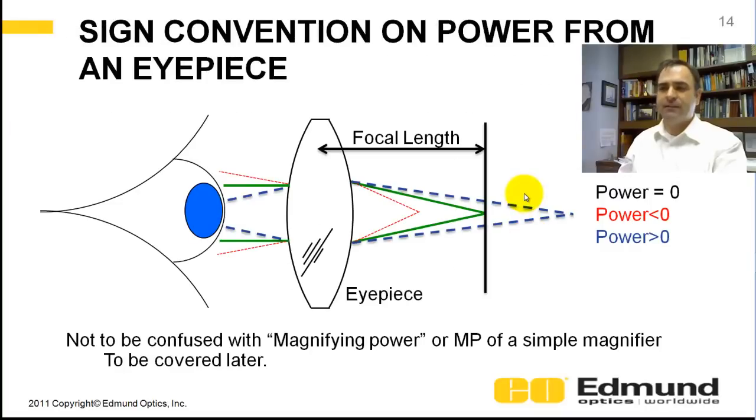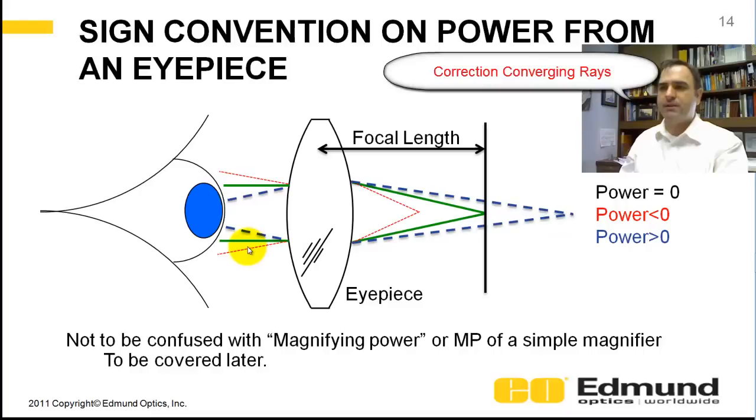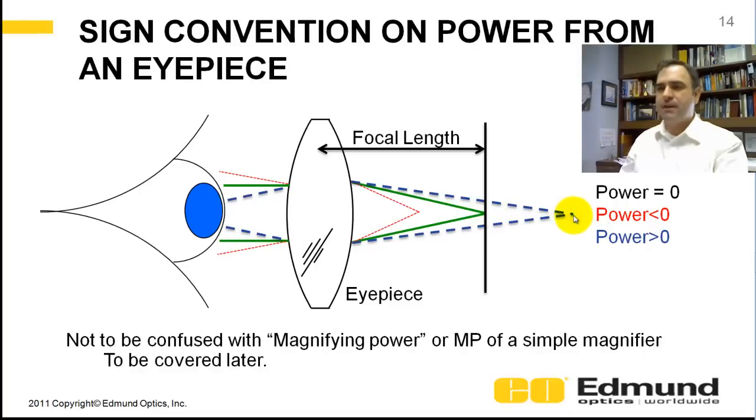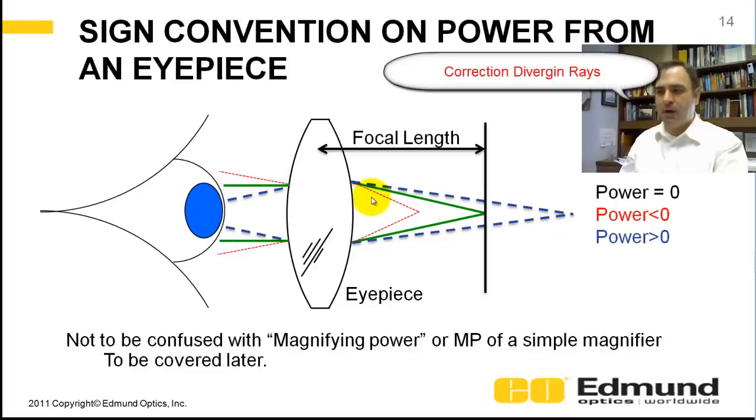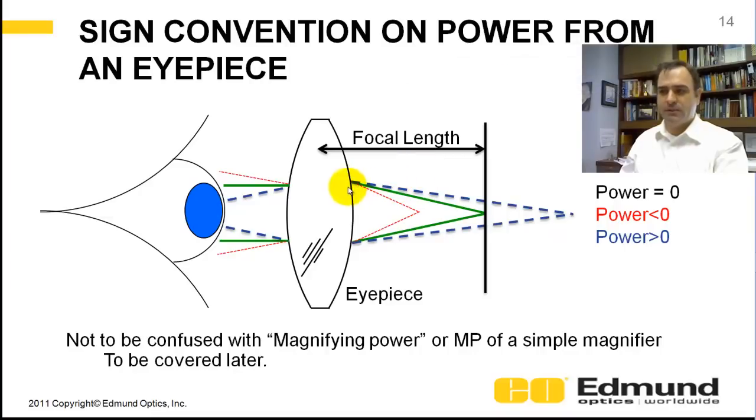Let's talk about sign convention. If you're myopic, these red rays, your power is actually negative. So if we were to put an LCD or a piece of paper here in this eyepiece, you actually would be focused for negative power. It would be diverging rays coming out. On the other hand, if you put your LCD aft of the lens, your rays coming out will be converging and your power is positive. This power is not to be confused with magnifying power from a simple magnifier. We'll be talking about that later.